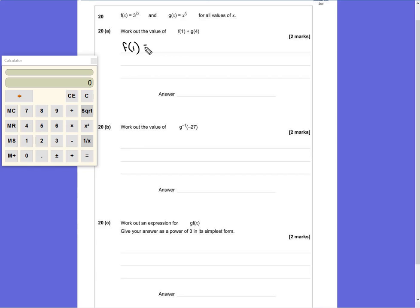For f(1), we have 3^(2x), so 2 times 1, which is 3², which equals 9.